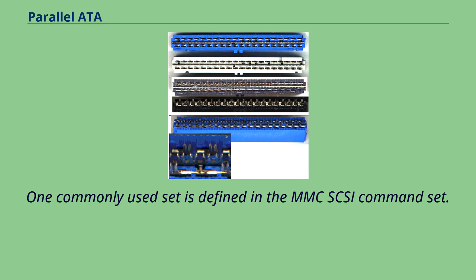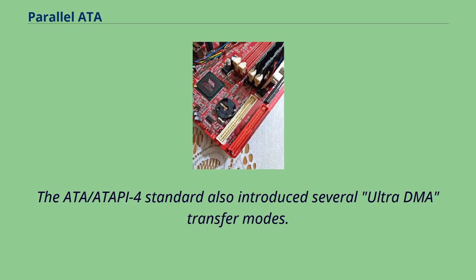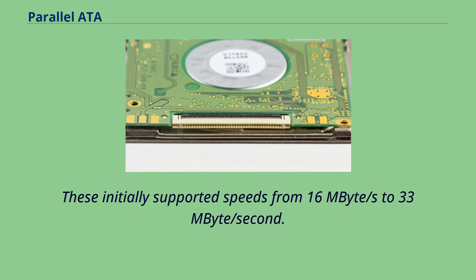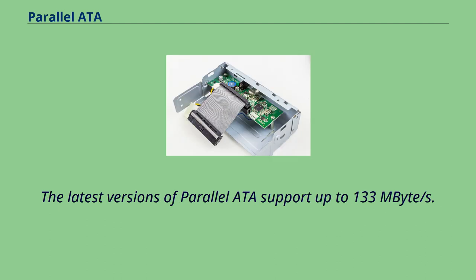ATAPI was adopted as part of ANSI/INCITS 317-1998, AT attachment with packet interface extension. The ATA/ATAPI-4 standard also introduced several UltraDMA transfer modes. These initially supported speeds from 16 MB/s to 33 MB per second. In later versions, faster UltraDMA modes were added, requiring new 80-wire cables to reduce crosstalk. The latest versions of Parallel ATA support up to 133 MB/s.